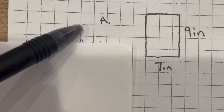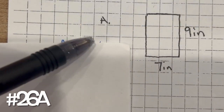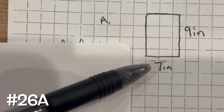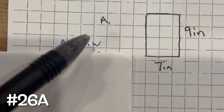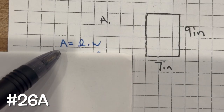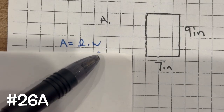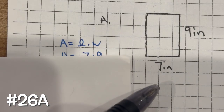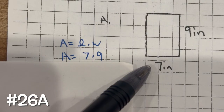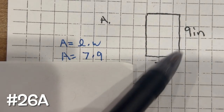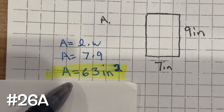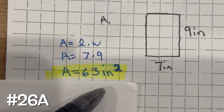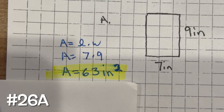For problem 26a, we need to find the area for each figure. For the area of a rectangle, the formula is area equals length multiplied by width. So we have 7 multiplied by 9, which gives you an area of 63 square inches.